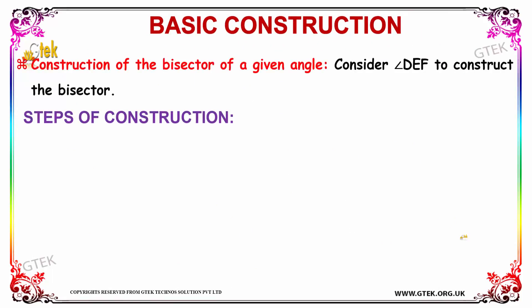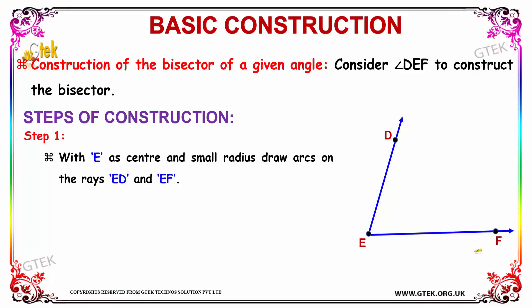Let's go with some examples for the construction of the bisector of a given angle. We are going to consider angle DEF in order to construct the bisector. Let's go with the steps of construction as follows. With step one, you can see point E, point D, and point F over here. With point E as center,